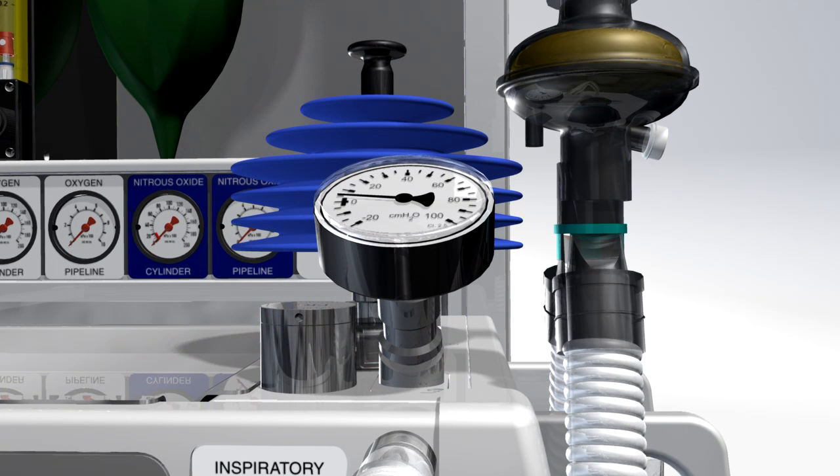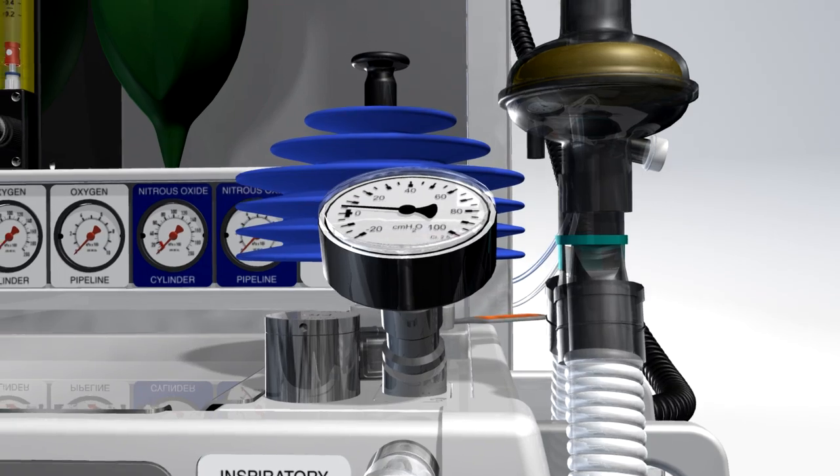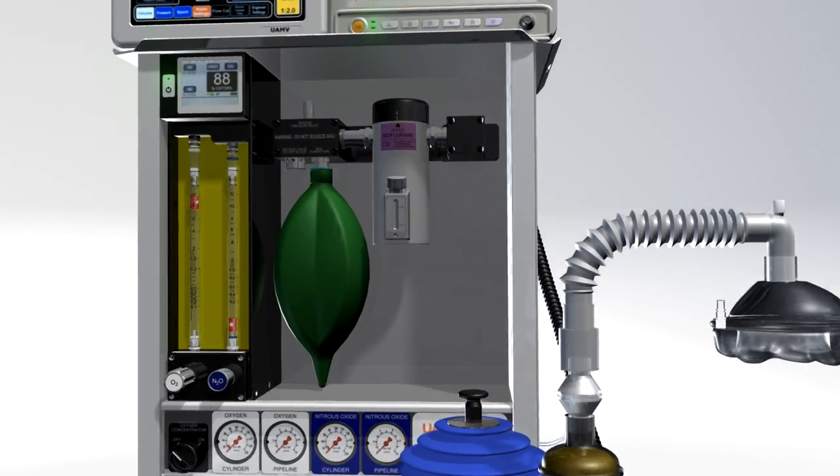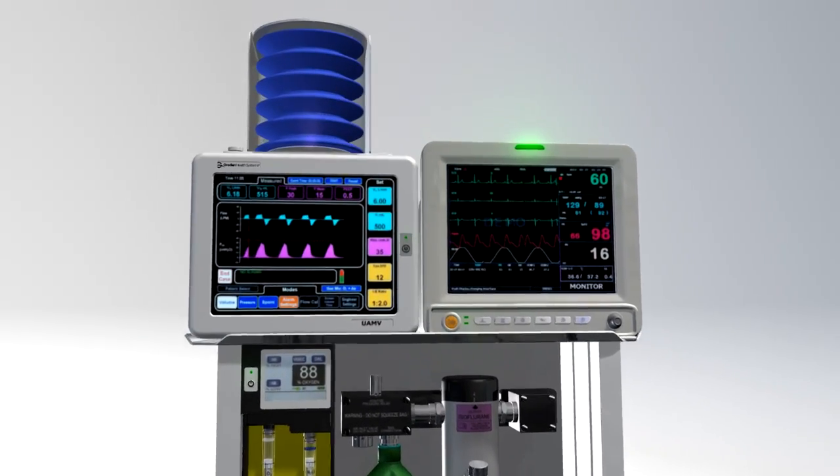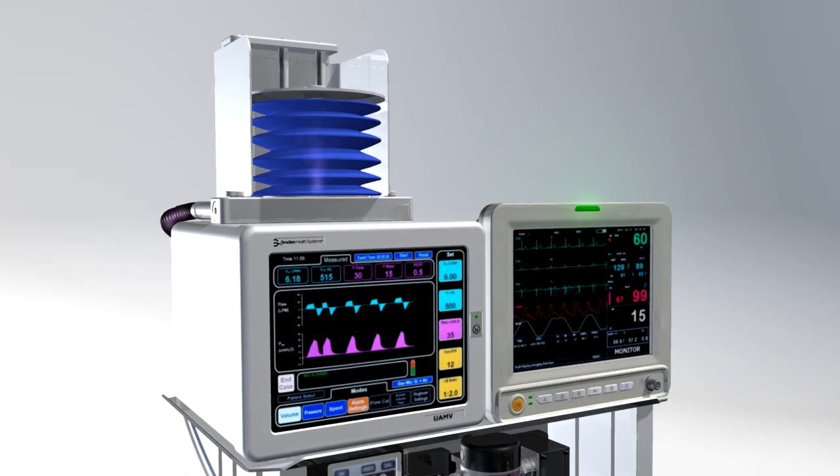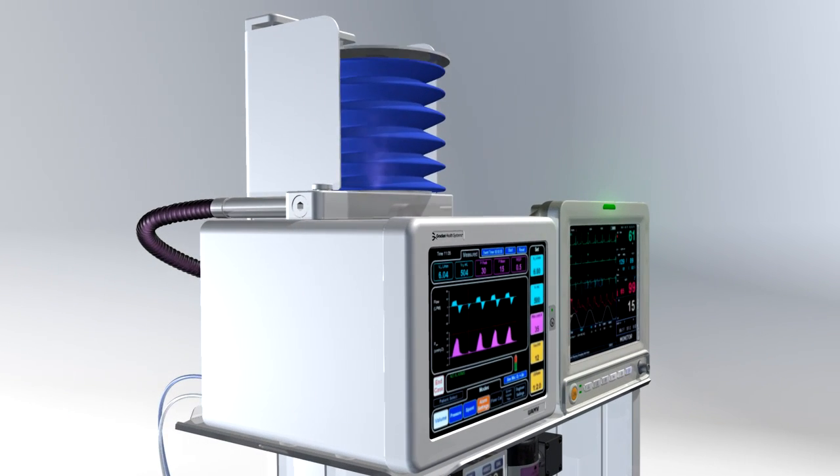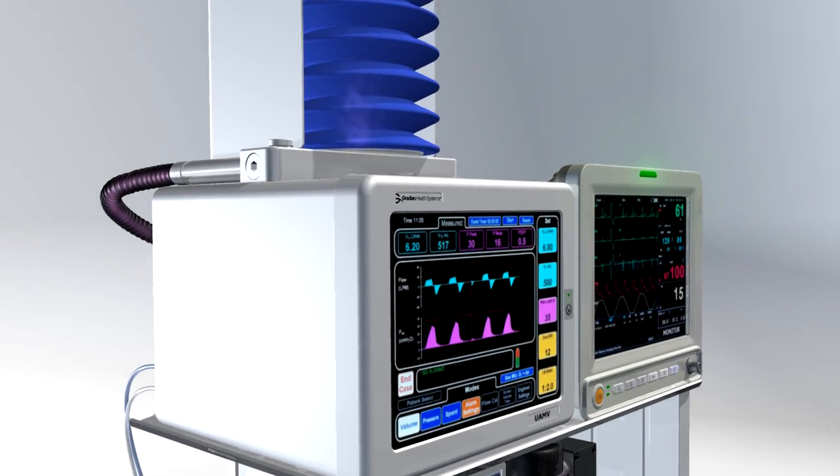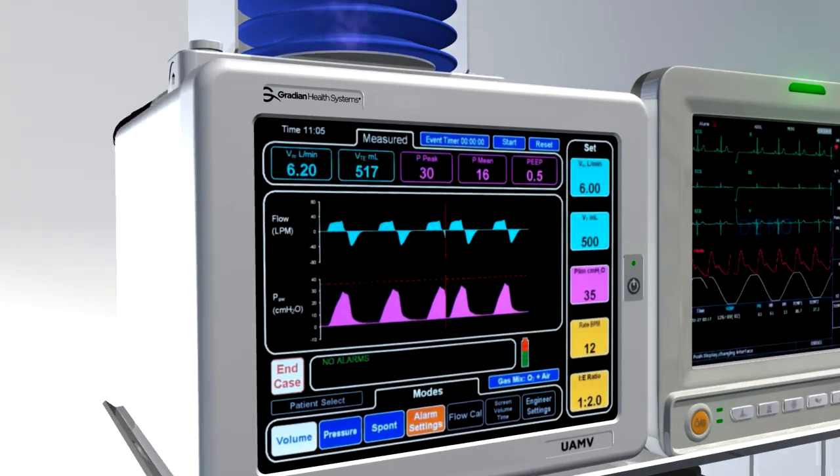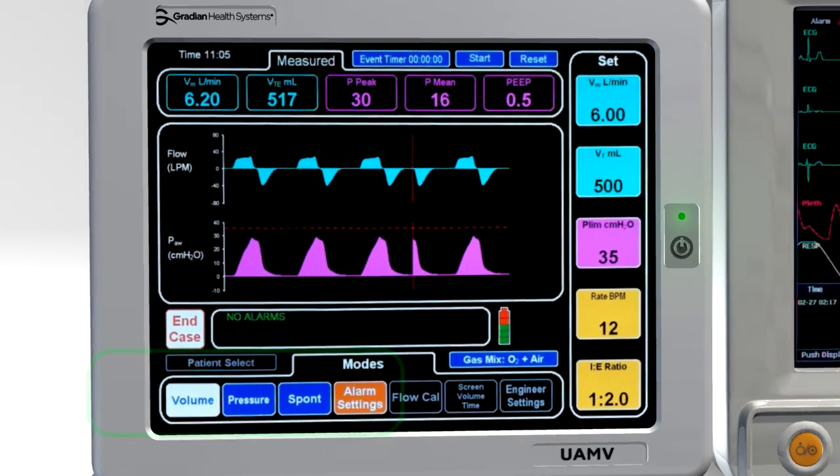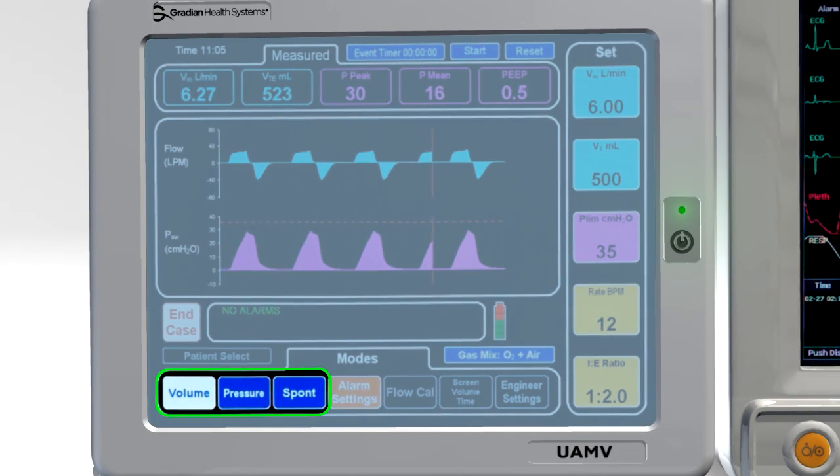The optional ventilator provides automatic IPPV. It is electrically driven and does not require compressed gas. Internal batteries provide up to six hours of backup operation. The UAM ventilator operates in volume control and pressure control modes. During spontaneous breathing and manual IPPV, it will display pressure and flow readings.